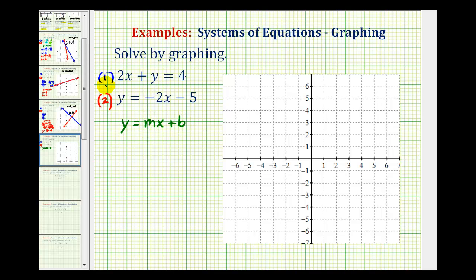Looking back at number one, we could very easily solve this equation for y, so both equations would be in slope-intercept form. Let's go ahead and do that. If we have 2x plus y equals 4, we can subtract 2x on both sides. This would give us y equals negative 2x plus 4.